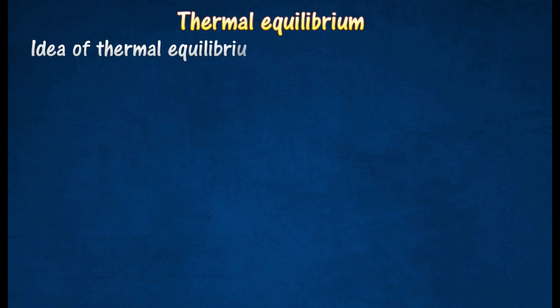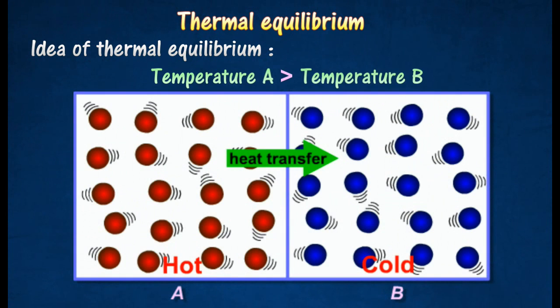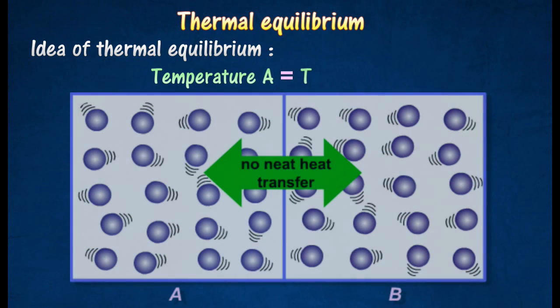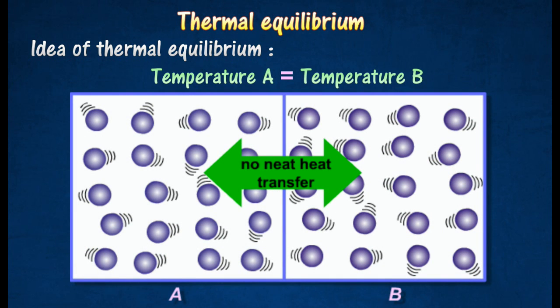The figure shows two objects A and B that are in contact with each other. The temperature of A is higher than that of B, so heat will be transferred from A to B. After a while, both objects A and B will attain the same temperature.